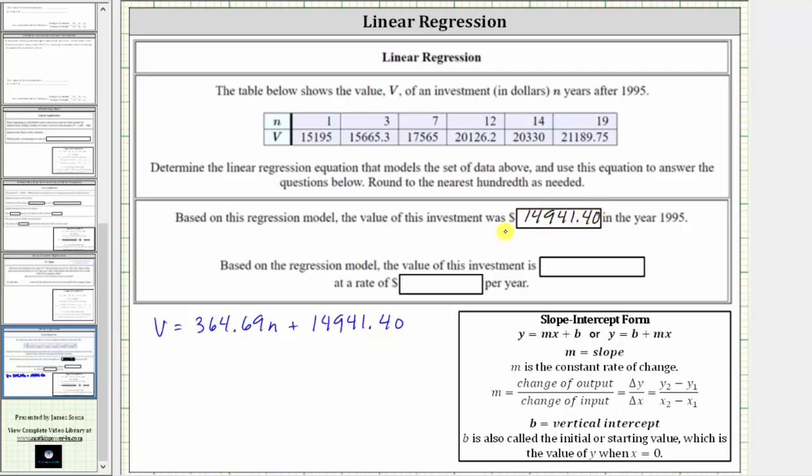If we didn't remember this, we could substitute zero for n, so let's also show that. If we substitute zero for n, we have V equals 364.69 times zero plus 14,941.40. But this product is zero, which does give us the value of $14,941.40.